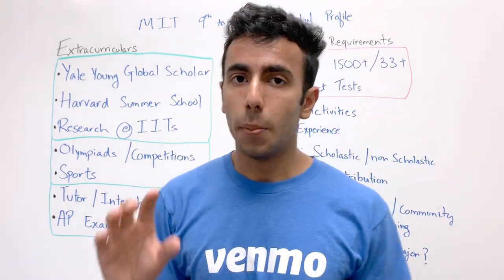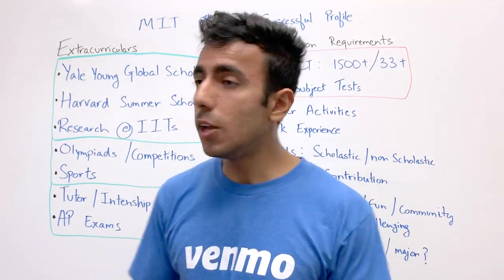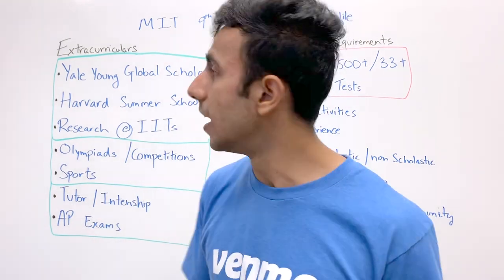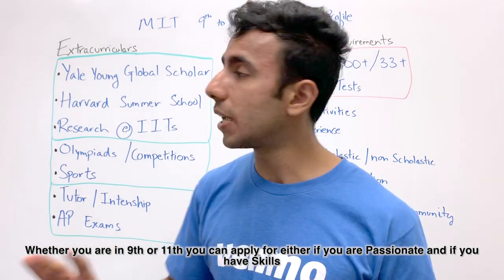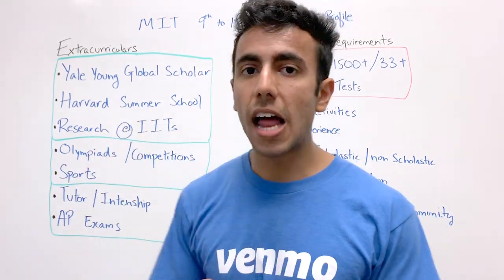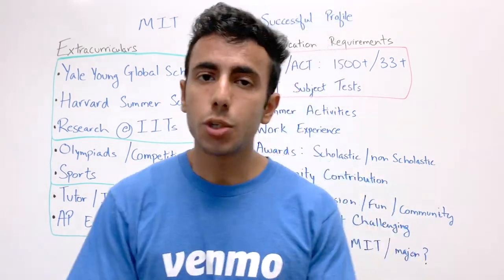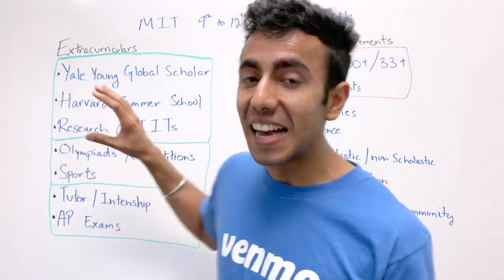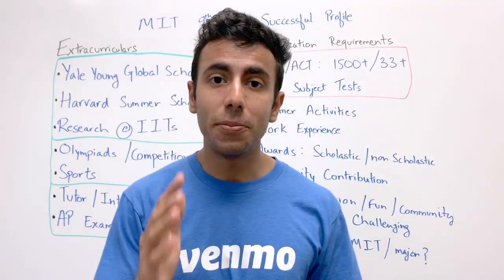Number one is Yale's Young Scholars Program. Ashish Sarman's profile — linked here — shows he attended Yale's summer program, which was considered a national achievement and contributed to his MIT acceptance. Number two is Harvard Summer School. Number three is research at an IIT. You can apply to any of these regardless of whether you're in 9th, 10th, or 11th grade. Show passion for your subject, apply to all three, and getting into even one will make MIT more achievable.